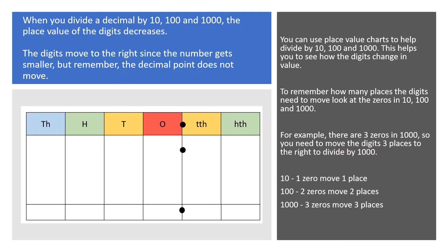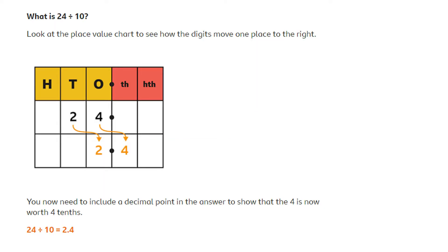When we are dividing by 10, 100 and 1000, we follow the same process, but the value is now becoming smaller, so we will move to the right. If we're dividing by 10, we will move one place to the right. If we're dividing by 100, we will move two places to the right. And if we're dividing by 1000, we will move three places to the right. Let's look at that in action.